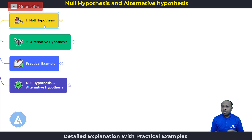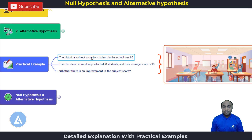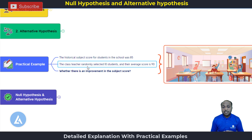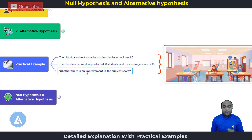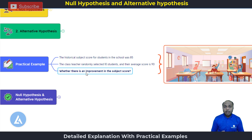After understanding the theoretical part of null hypothesis and alternative hypothesis, let's understand them practically with an example. The historical subject score for students in the school was 85. But this time, the class teacher randomly selected 10 students and took their average. The average score came out to be 90. The class teacher wants to check whether there is an improvement in the subject score or not. For that purpose, we are going to use hypothesis testing.